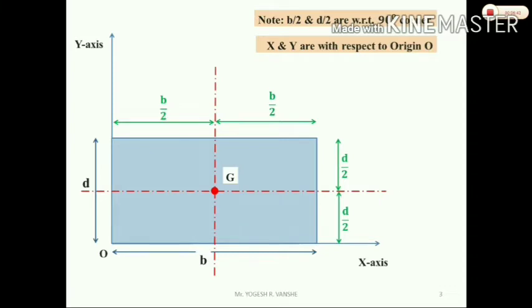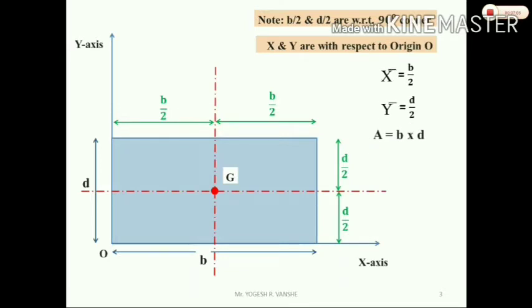X and y are measured with respect to origin O. The distance from the origin — the horizontal distance means x-distance, which equals b by 2. The y-bar distance is the vertical distance. The x-axis is horizontal and the distance from x-axis is vertical. So y-bar is the vertical distance. The area A is equal to b into d. These three values — x-bar, y-bar, and area — you have already put in the table.